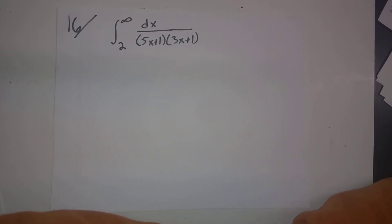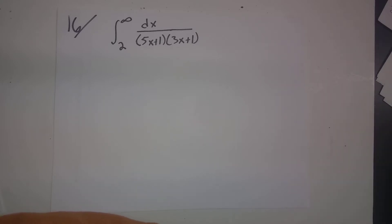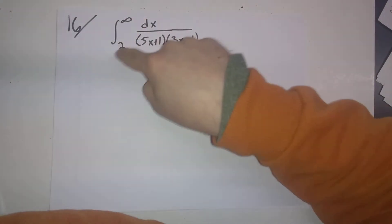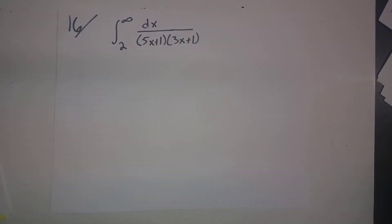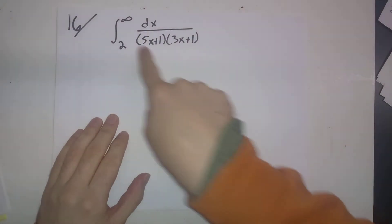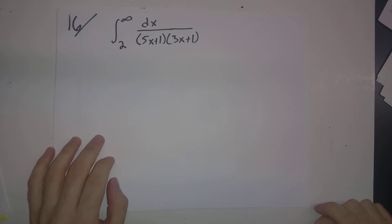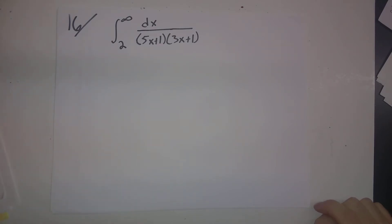Number 16: evaluate the integral from 2 to infinity of 1 over (5x+1)(3x+1) dx. This is going to be a bit of a twofer, because there are two different things going on. One is that this is an improper integral, so we want to practice doing that properly with limits. Also, there's a product of two linear factors in the denominator, so we'll need to use partial fractions to find the antiderivative.